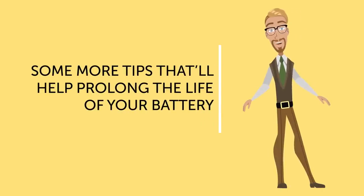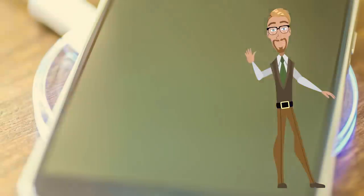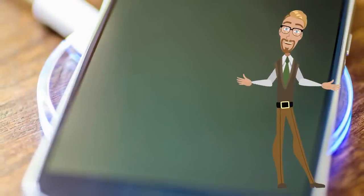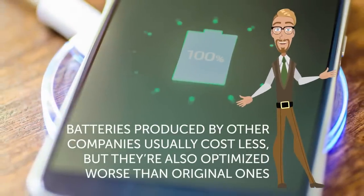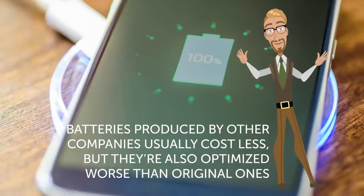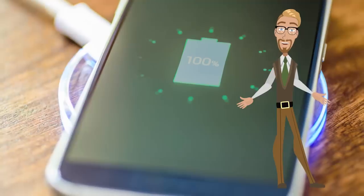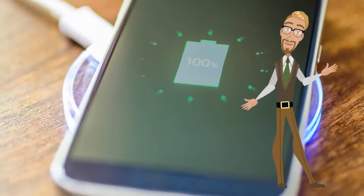Some more tips that'll help prolong the life of your battery. Use official batteries from your phone's manufacturer. Batteries produced by other companies usually cost less, but they're also optimized worse than original ones and this can harm your device. It's better to pay more once than spend a fortune repairing your phone.